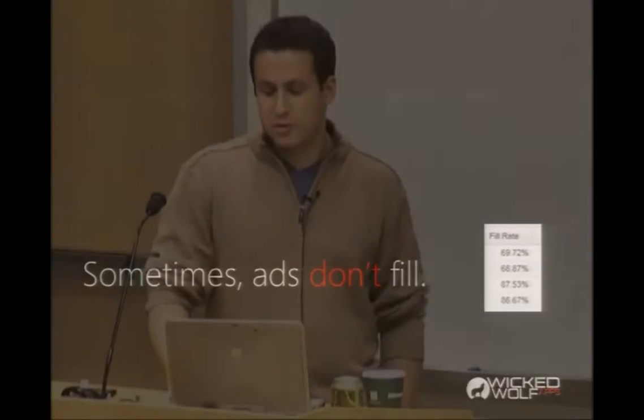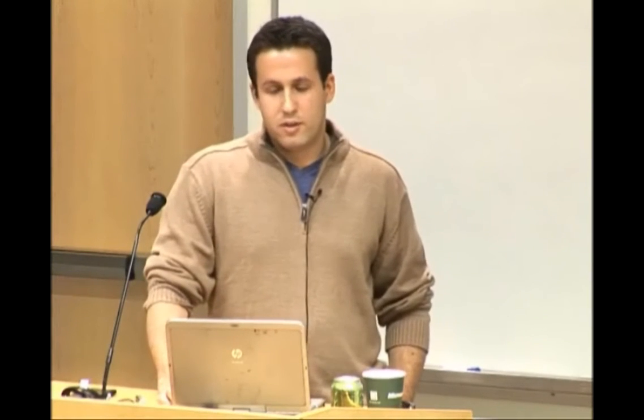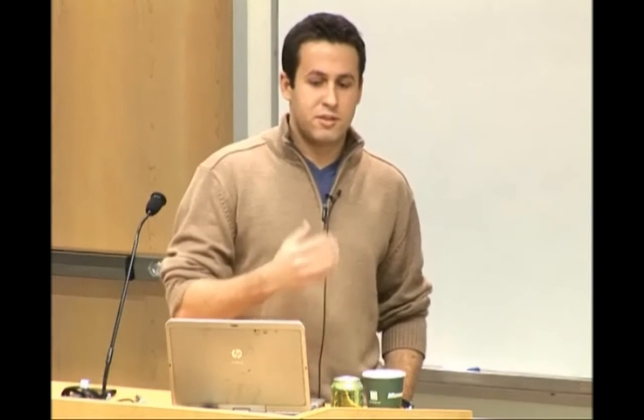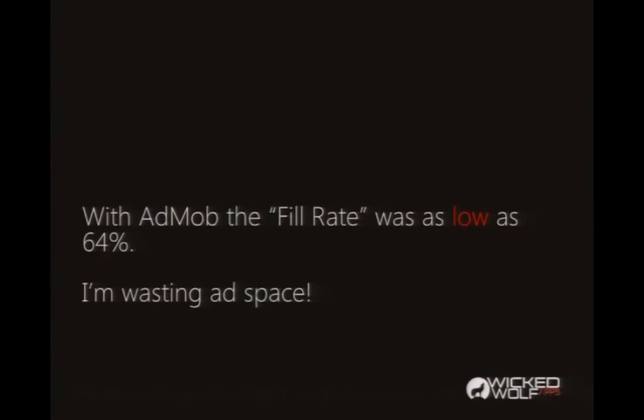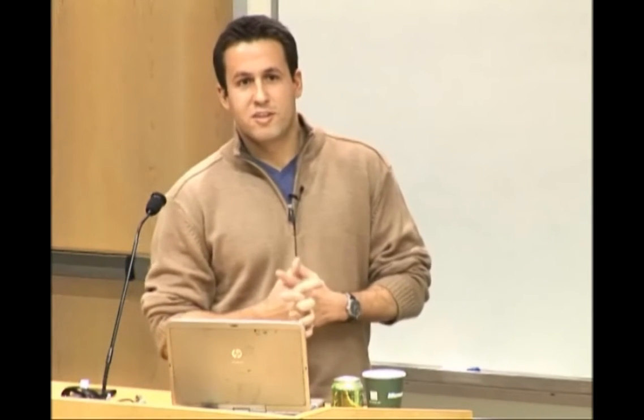One thing I learned from Google's reporting is they have a column called fill rate. What I learned is ads don't always fill. For a lot of times people were viewing my apps, the ad control says go get the next ad, and it returns saying there's nothing. For Google it was as low as 64% fill rate. I was thinking, that's a waste — I was getting less impressions than I could. So what could I fill that space with? The common thing I wanted to do was advertise my other apps.